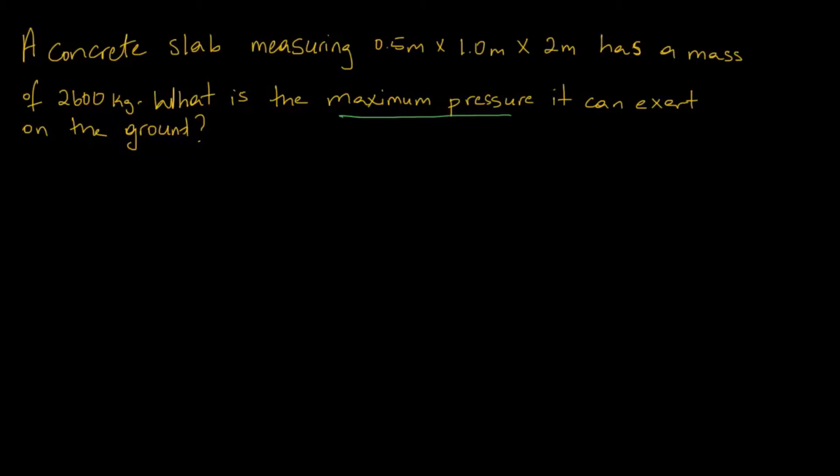A concrete slab measuring 0.5 meter by 1 meter by 2 meters has a mass of 2600 kilograms. What is the maximum pressure it can exert on the ground?